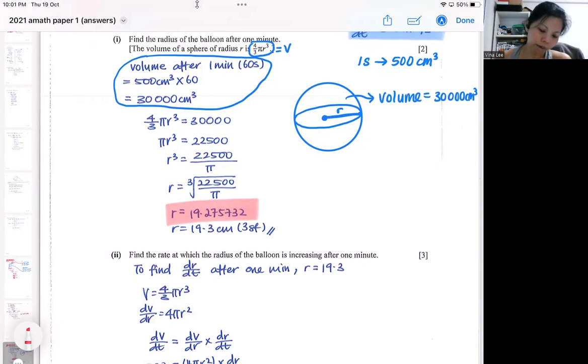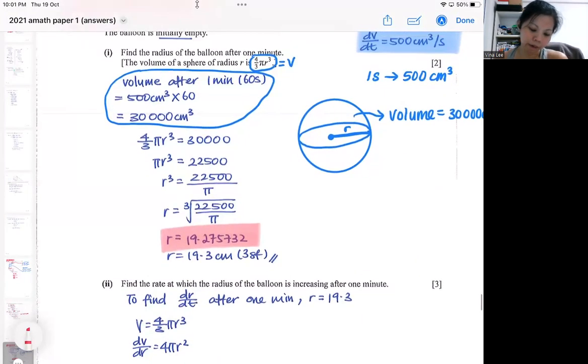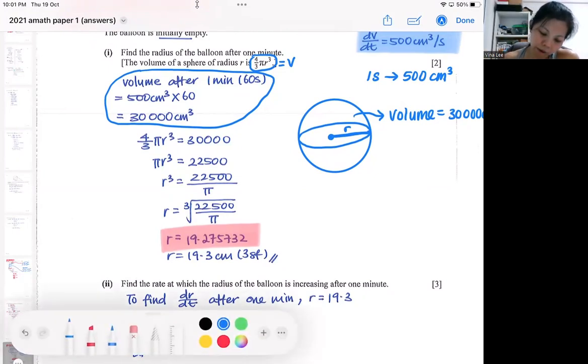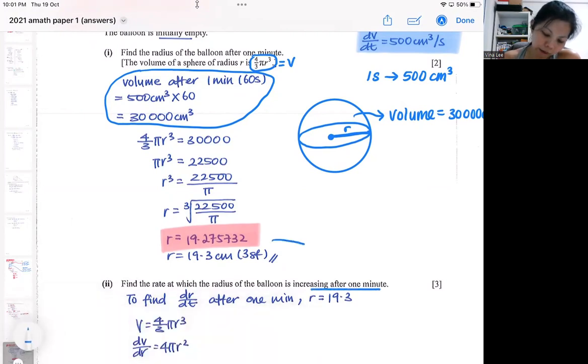In the subsequent part, if you are going to be using this radius, do take note that you should be using the longer, more detailed version of the radius. The next one, we are supposed to find the rate at which the radius is increasing after one minute. After one minute, this is the radius. So I will be using this radius. Even though I'm writing 19.3, when I input into my equation, I'm using 19.275732.